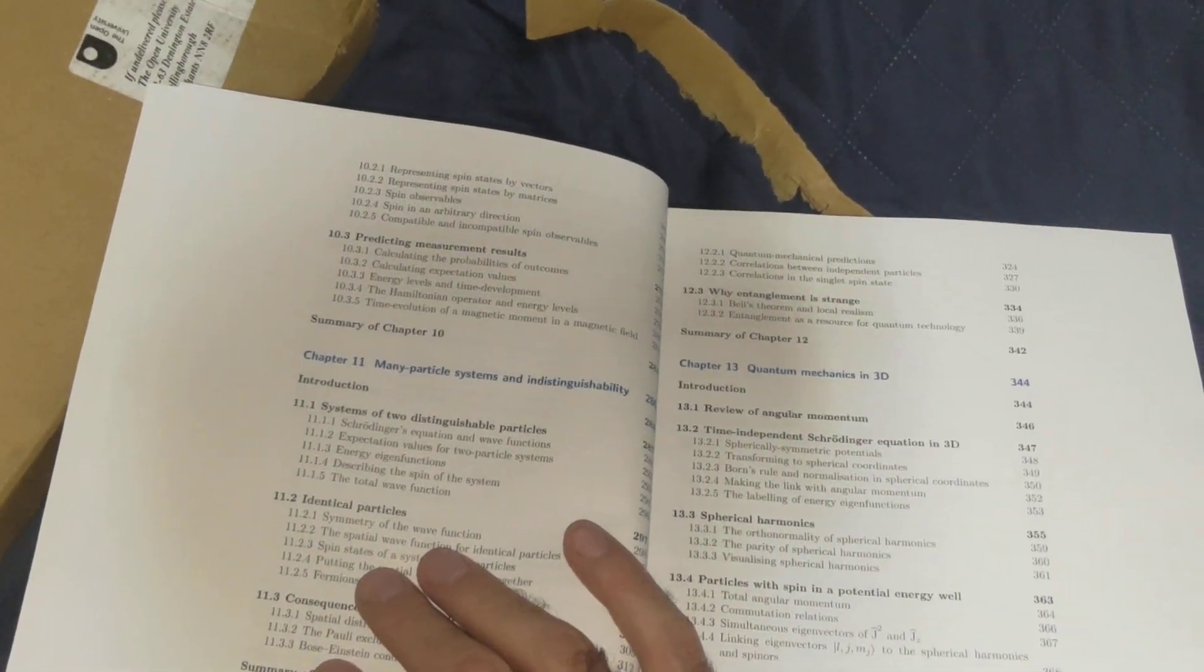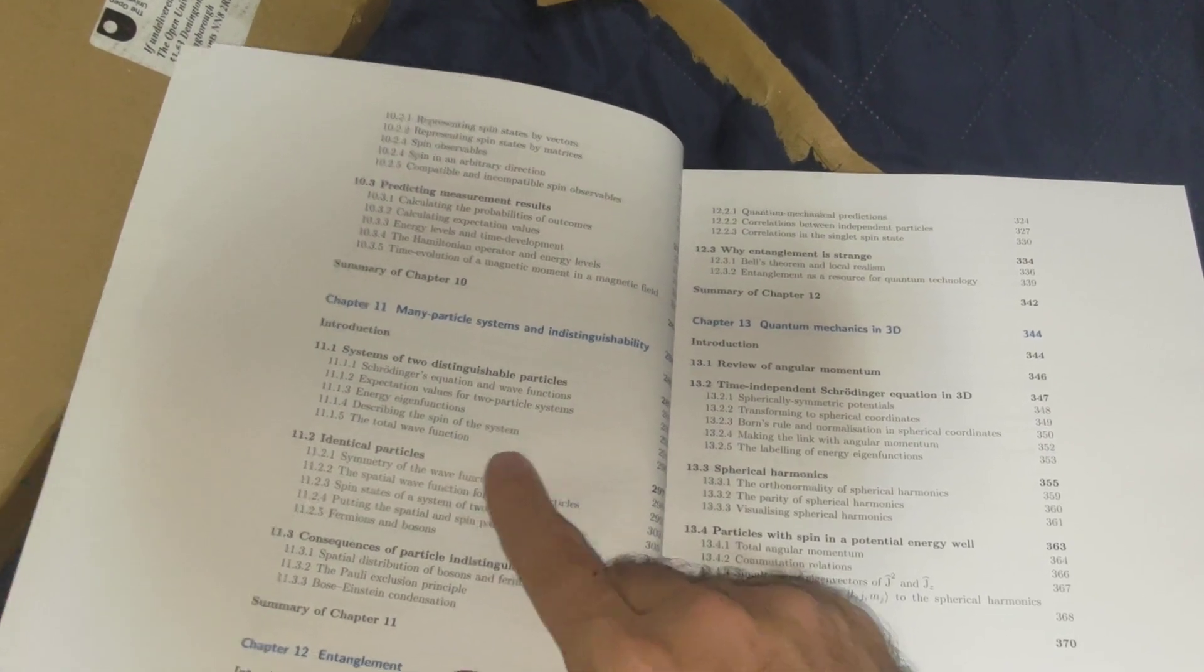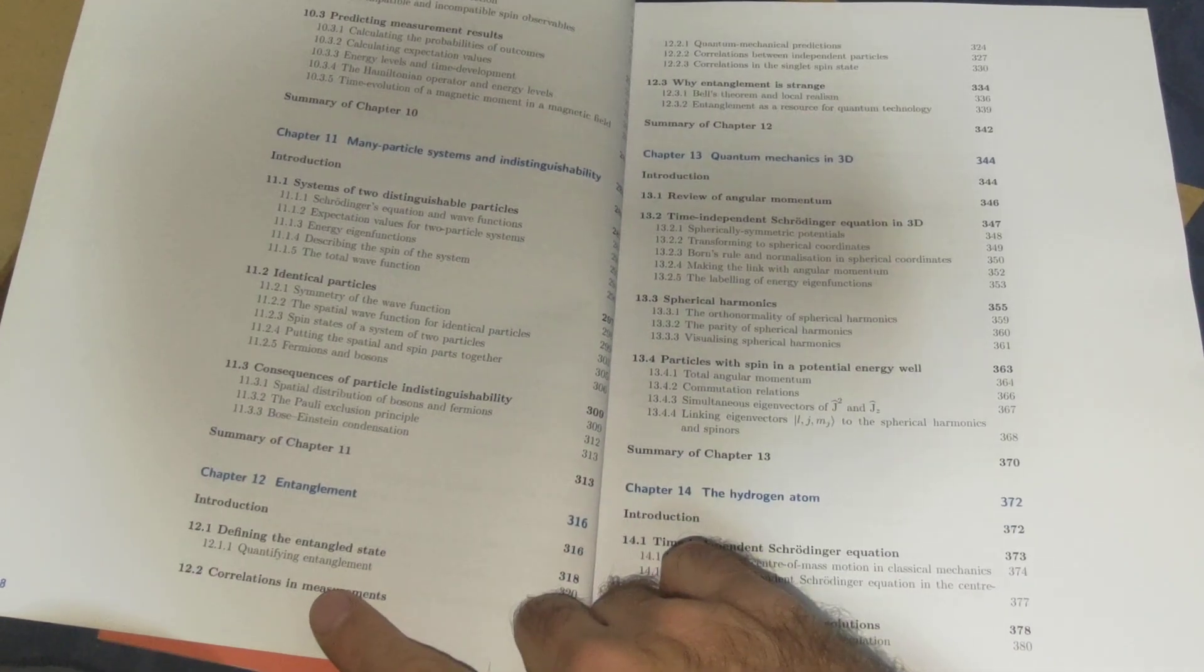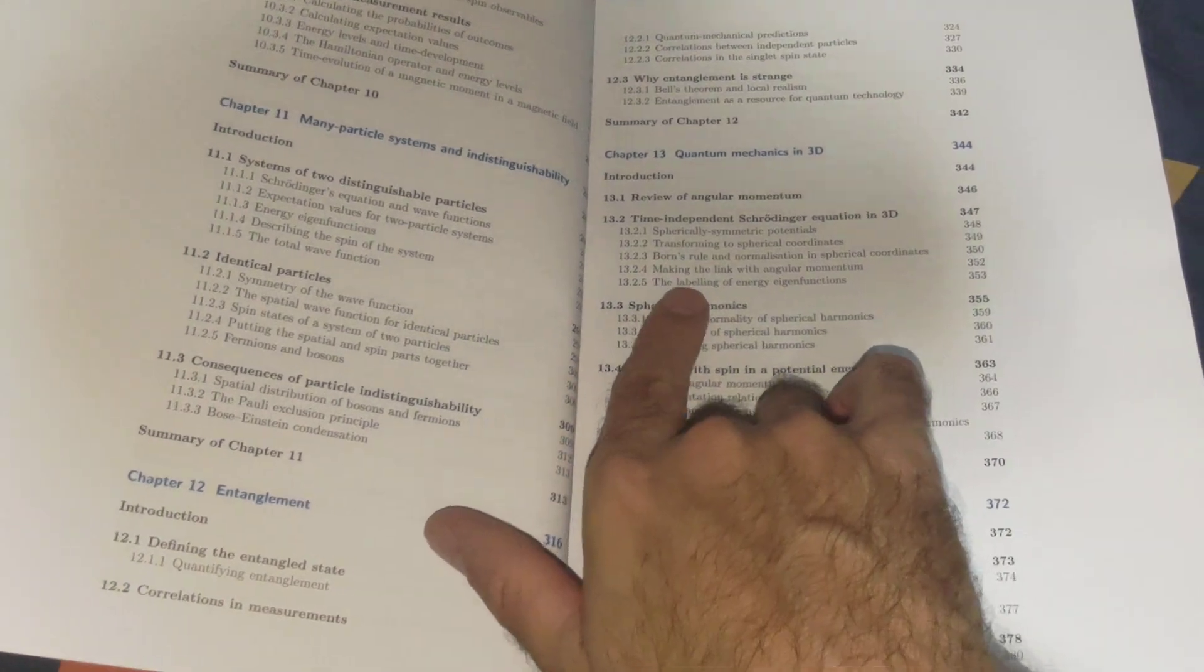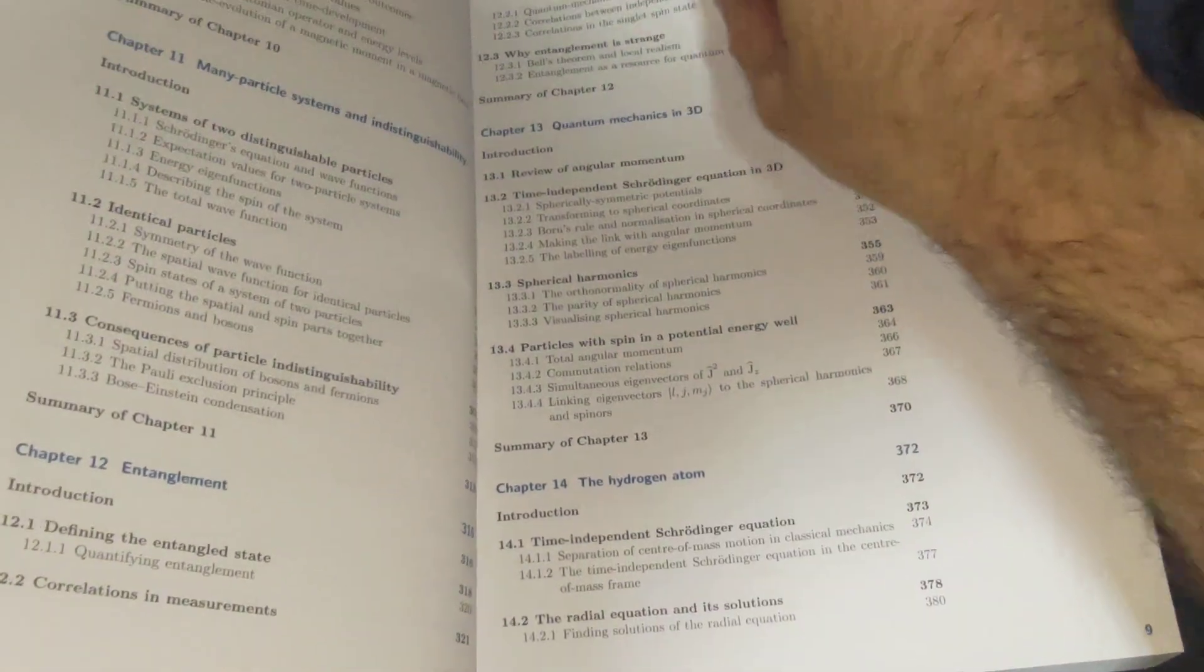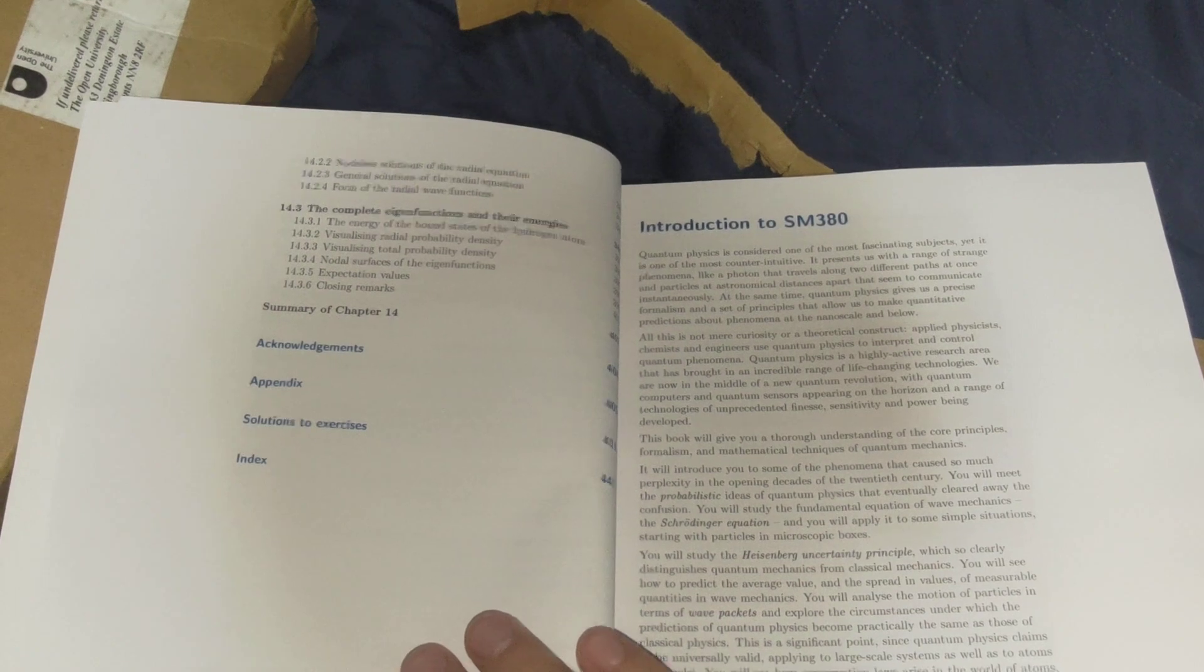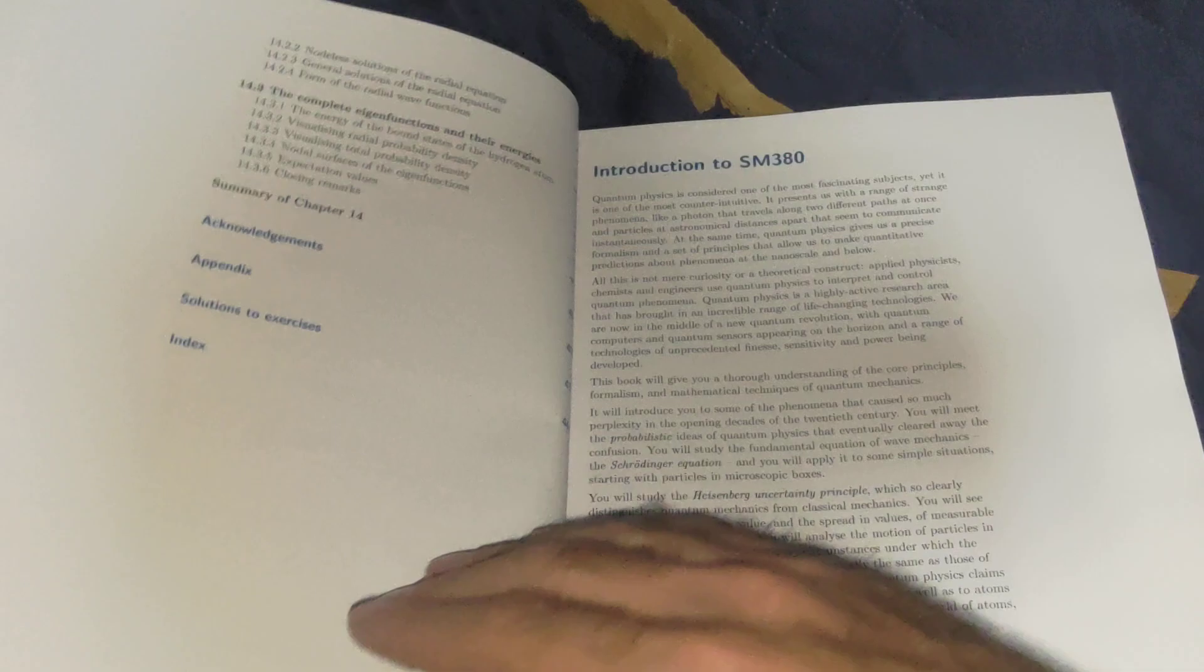Spin, a new kind of angular momentum and the mathematics thereof, predicting measurement results, system of two indistinguishable particles, identical particles, consequences of particle indistinguishability, entanglement. And then we have quantum mechanics in 3D, three-dimensional versions of things, and the hydrogen atom. The complete eigenfunctions and the energies, and that's what's in here.